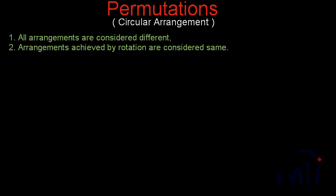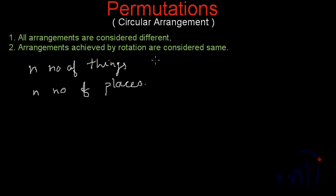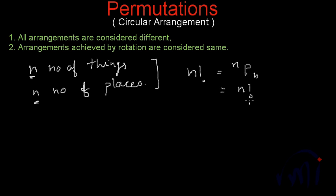If all the arrangements are considered different, things become very simple. If there are n number of things and we have n number of places to arrange these things, then there will be a total of n factorial ways — which is nothing but n P n, the arrangement of n things selected from n things. This eventually comes out as n factorial.